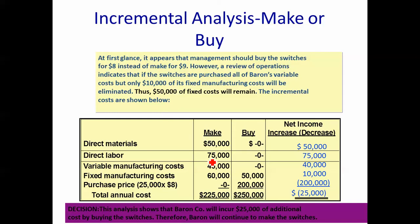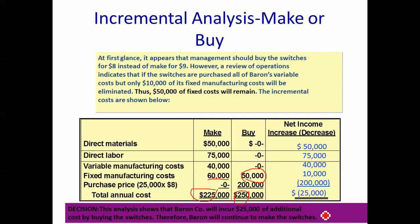On this basis, the make cost stays at $225,000. If I buy, I save on direct materials, direct labor, and variable overhead — but the fixed overhead: if I make it's $60,000, and if I buy, I can't eliminate most of that overhead because the building capacity is still there. So the annual cost to produce is $225,000, but the cost to buy is $250,000 — a difference of $25,000. This analysis shows the company would incur an additional $25,000 if we buy from the outside company.